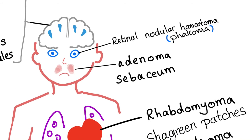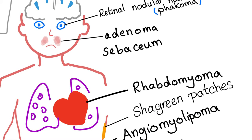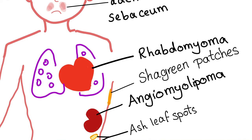In the heart, we have cardiac rhabdomyoma, which occurs in children. It is analogous to atrial myxoma in adults. We also have angiomyelolipomas of the kidneys.